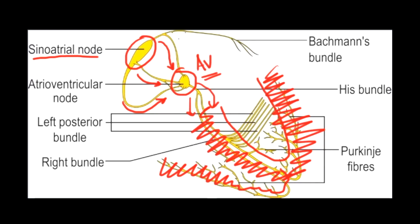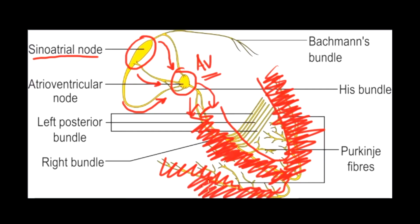When looking at the electrical depolarization on an EKG, are we actually seeing the electrical movement down the conduction system? The answer is no — this is such a small amount of electricity that it's almost imperceptible on an EKG. What we're actually measuring is the depolarization of the muscle, which is very large in amplitude. Like watching a demolition: we don't see the electricity going into the wires to the dynamite — we see the dynamite blow up and the building come down. What we see on an EKG is the depolarization of the actual muscle cells.